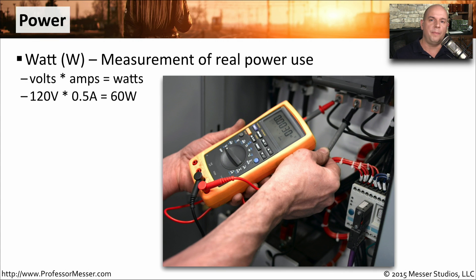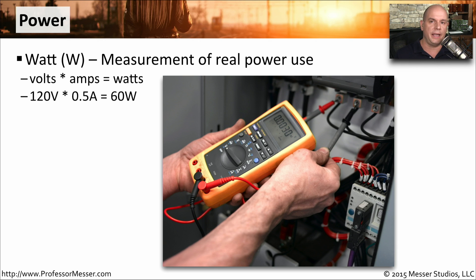To measure the amount of power being used, we need to calculate the number of watts. The calculation for watts is simply to multiply the number of volts times the number of amps. So if we have a device using a 120-volt connection and it is using 0.5 amps, that means it's using a total of 60 watts of power.